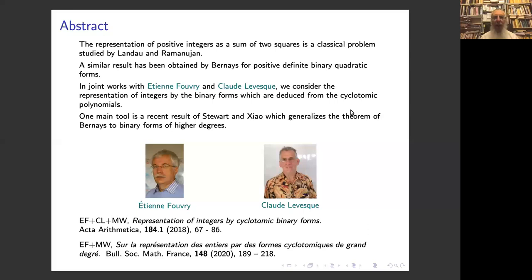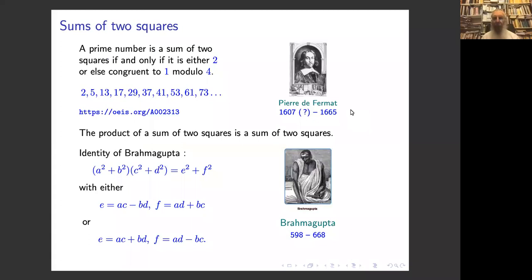Our work is published in Acta Arithmetica with Etienne Fouvry and Claude Lévesque, and in the Bulletin de Société Mathématique de France — it will appear in June with Etienne Fouvry. It is based on some results due to Stuart and Xiao. So I start with the sum of two squares, a classical problem which goes back to at least Pierre de Fermat.